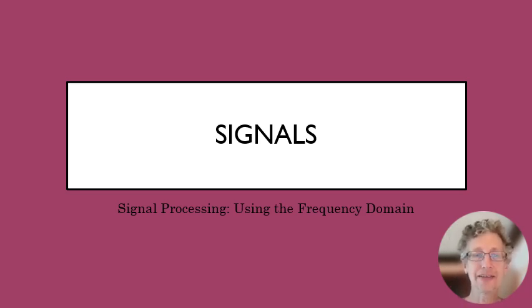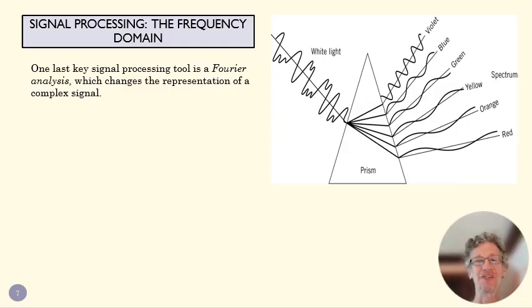Alright, the last signal processing process that we're going to talk about is what's called Fourier analysis, which allows us to see a dynamic signal in the frequency domain. So let's figure out what exactly that means. Those are some words that may not have a lot of meaning to you. So what it does is it changes the representation of a complex signal. We've said that a lot of dynamic signals are sums of simple signals and that can contain a lot of information.